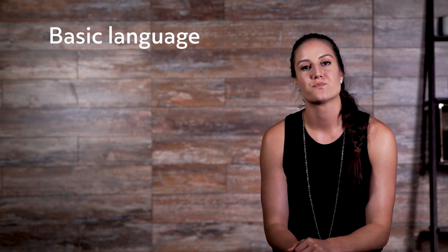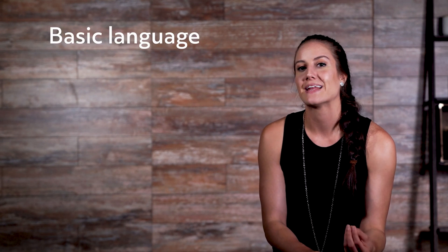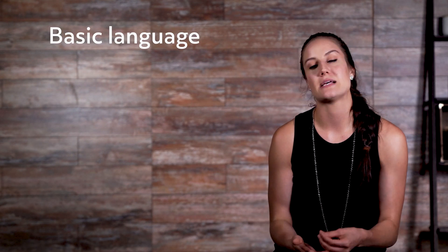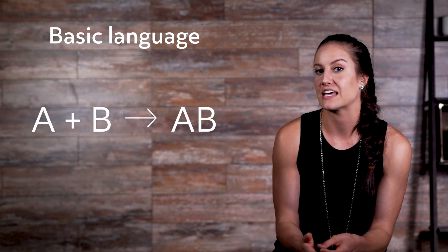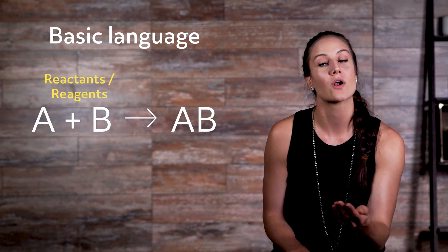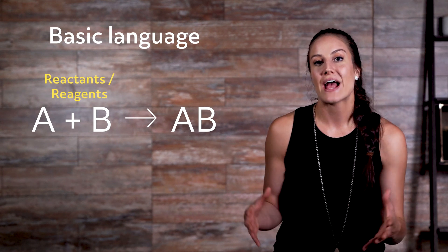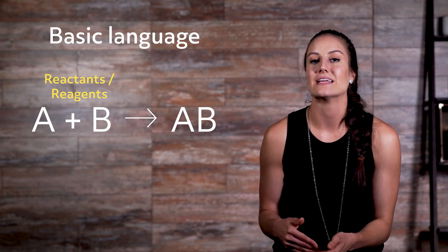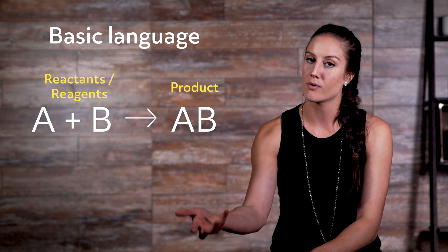Now, the last thing we'll talk about, as promised, is other things that are pretty useful to know. I just want to talk about two things: the first is basic language, and the second is reaction rates. Basic language: the individual substances before they are combined together to react are called reactants, or reagents. These reactants, once combined, yield a product or products.